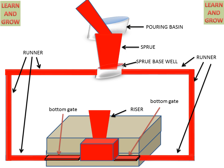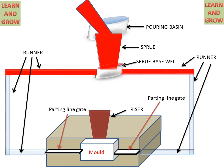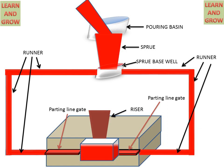The third system is the parting line gate, where the gate is provided at the parting line between the cope and drag boxes. The overall process is the same — molten metal comes and fills the cavity through the parting line gate. These are the different types of gating systems for filling the mold cavity.